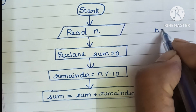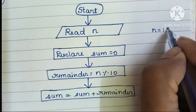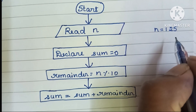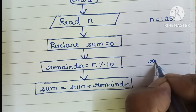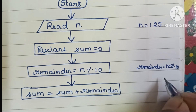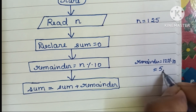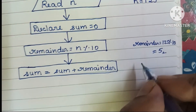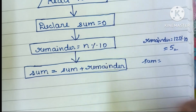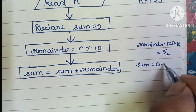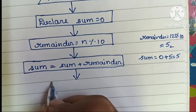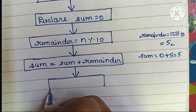For example, if we want to find the sum of digits of 125, N is equal to 125. First, we find the remainder: 125 modulo 10 gives a remainder of 5. Then sum is equal to sum plus remainder — initially sum is 0, so 0 plus 5 gives sum equal to 5.